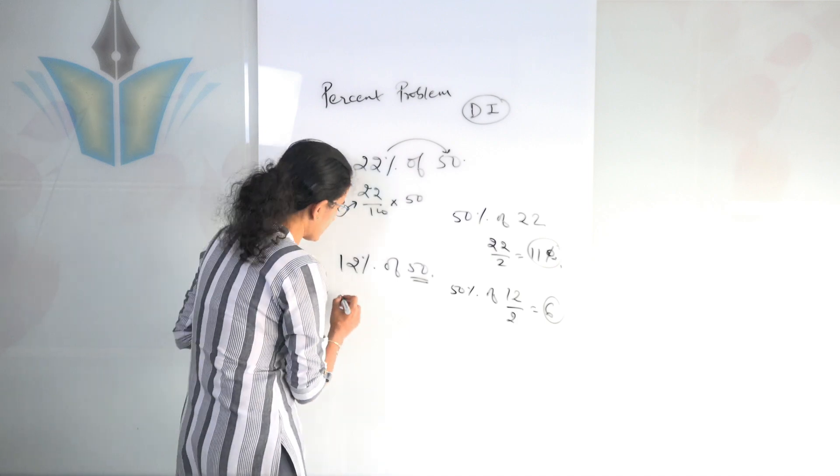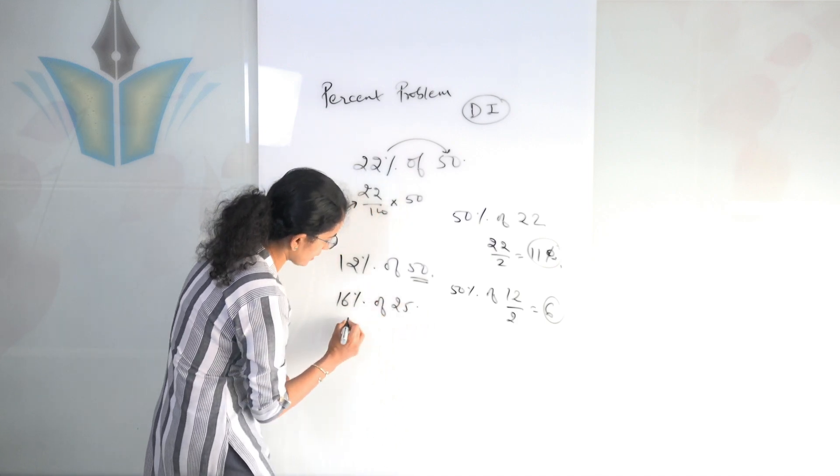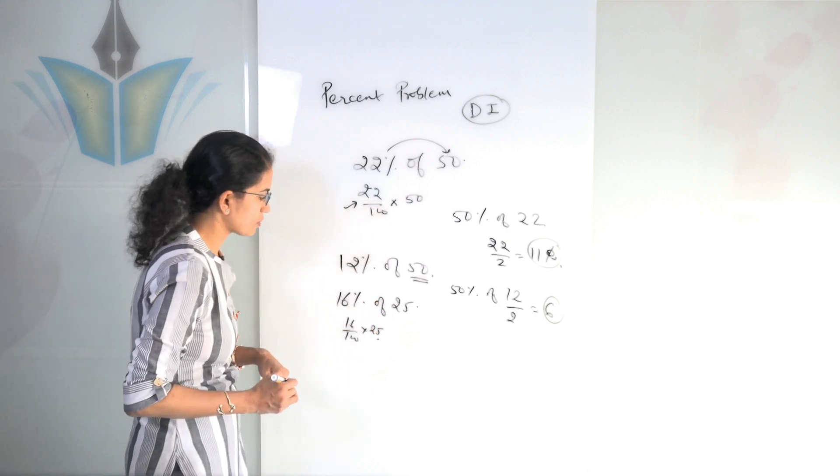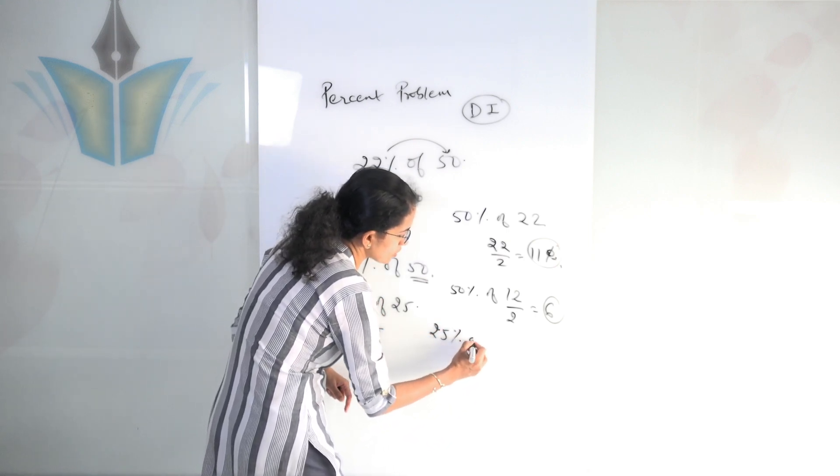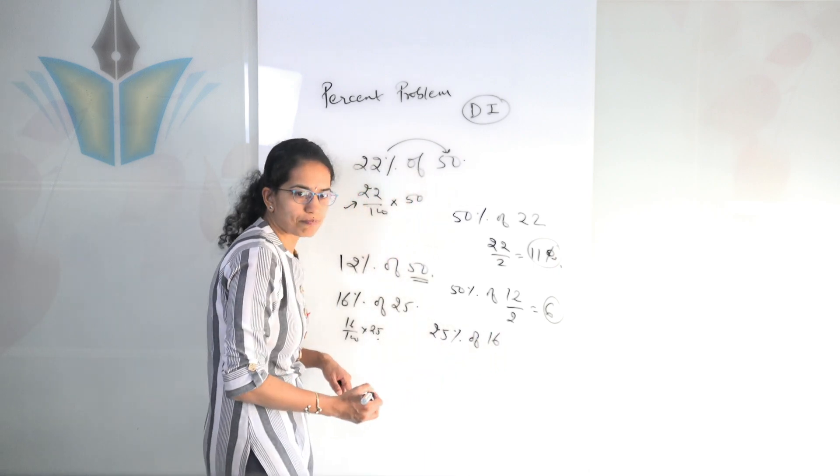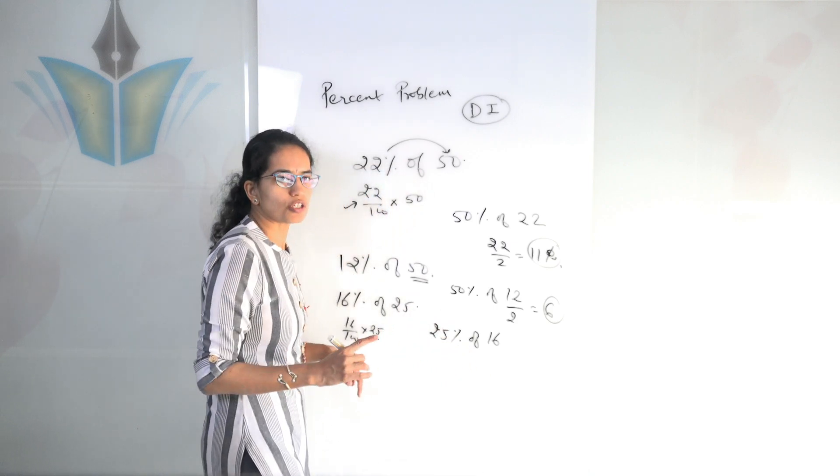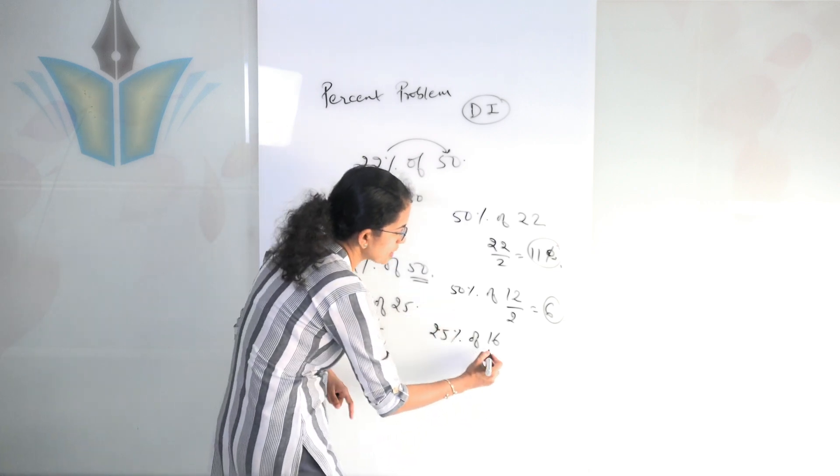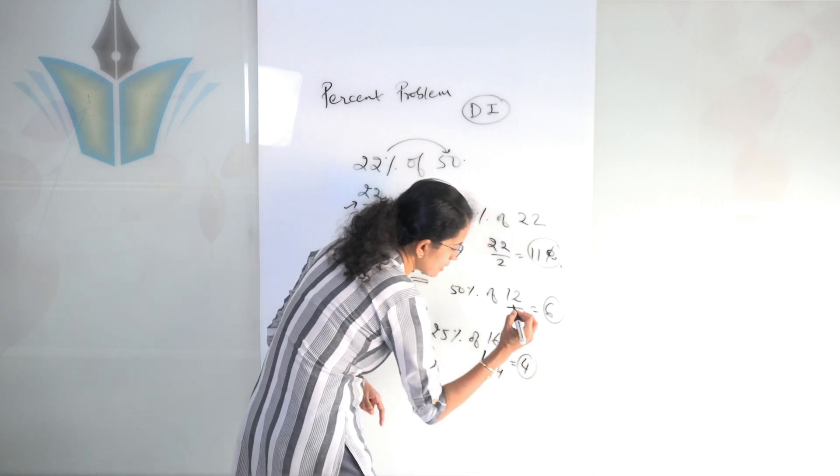I can work with 25. So let's say 16% of 25. How would I solve? So I can write it as 16 divided by 100 into 25. That's one way you can solve. But another easy method would be 25% of 16. That means I can take 1/4th the value of 16. Because 25% means 1/4th. So what I do is 16 divided by 4. That means I get the answer as 4 here.